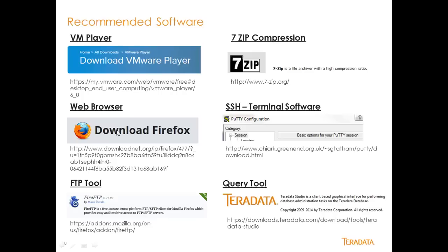I recommend a web browser — you can use any popular one you want, such as Internet Explorer or Google Chrome, but I prefer Firefox. I also recommend you use an FTP tool; you can use any FTP tool you want, as this will help you with moving data in and out of Aster. I recommend FireFTP. You will also need an SSH or terminal-based software product that will allow you to log in to the Aster environment through a terminal session.